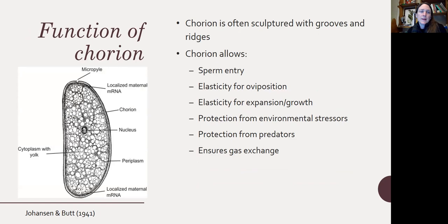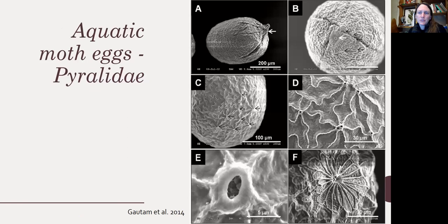The chorion is the outside layer, often sculptured with grooves and ridges. It needs to allow little gaps and holes for sperm entry — called micropyles — but it also needs some elasticity because it must be squeezed out of the insect when it's laid, and it needs to expand as the embryo grows. It also needs to protect the egg from environmental stressors and predators, while at the same time allowing gas exchange. Here are some scanning electron micrographs of the chorion for aquatic moth eggs, showing really crazy patterns and interesting features.